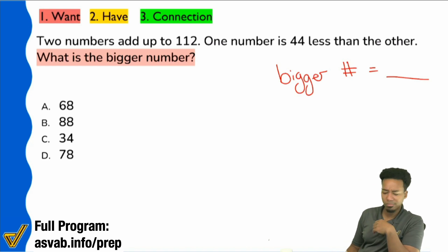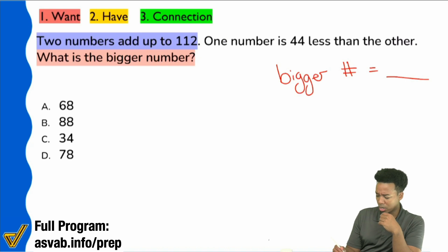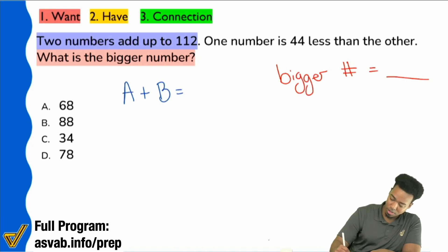Let's use A and B and I see here that it says two numbers add up to 112. So everybody, what's the equation that I'm going to write for that? Two numbers add up to 112. Using A and B, what are you going to write? What are you going to write for that equation? Two numbers add up to 112. Appreciate y'all. Yeah, A plus B equals 112. So there we go. A plus B equals 112.